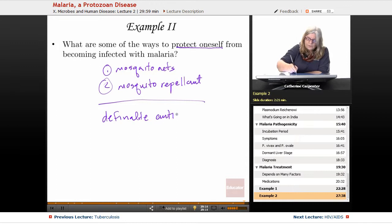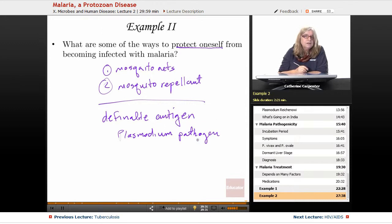What part of the plasmodium pathogen can produce a reliable, identifiable antigen to enable the immune system to eradicate malaria?